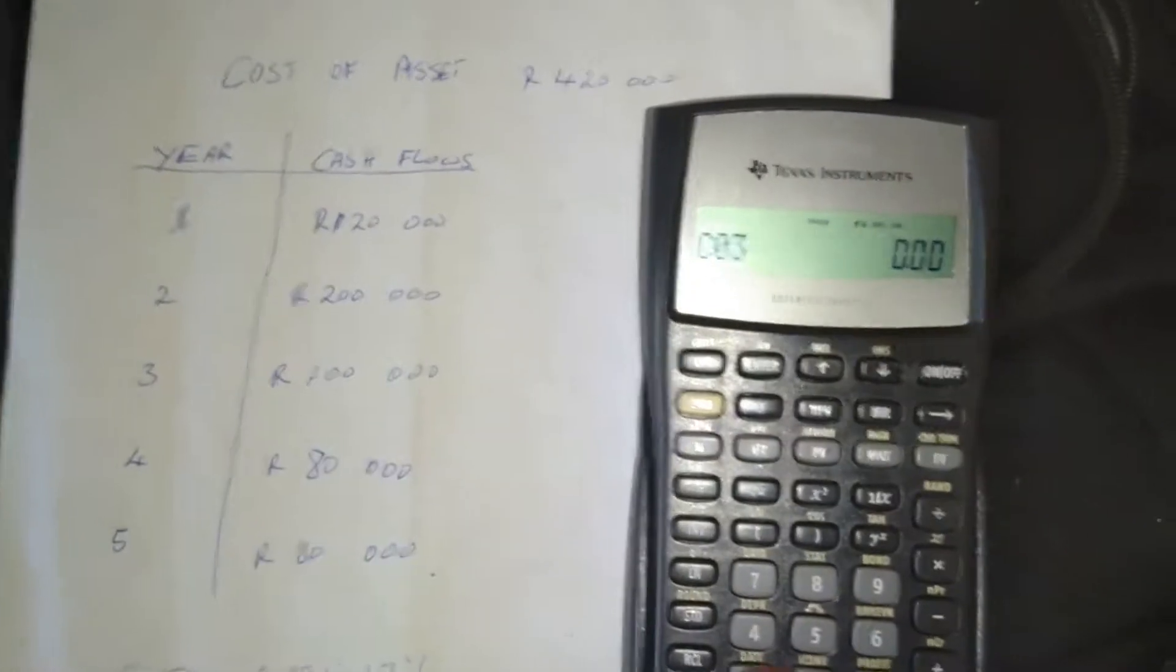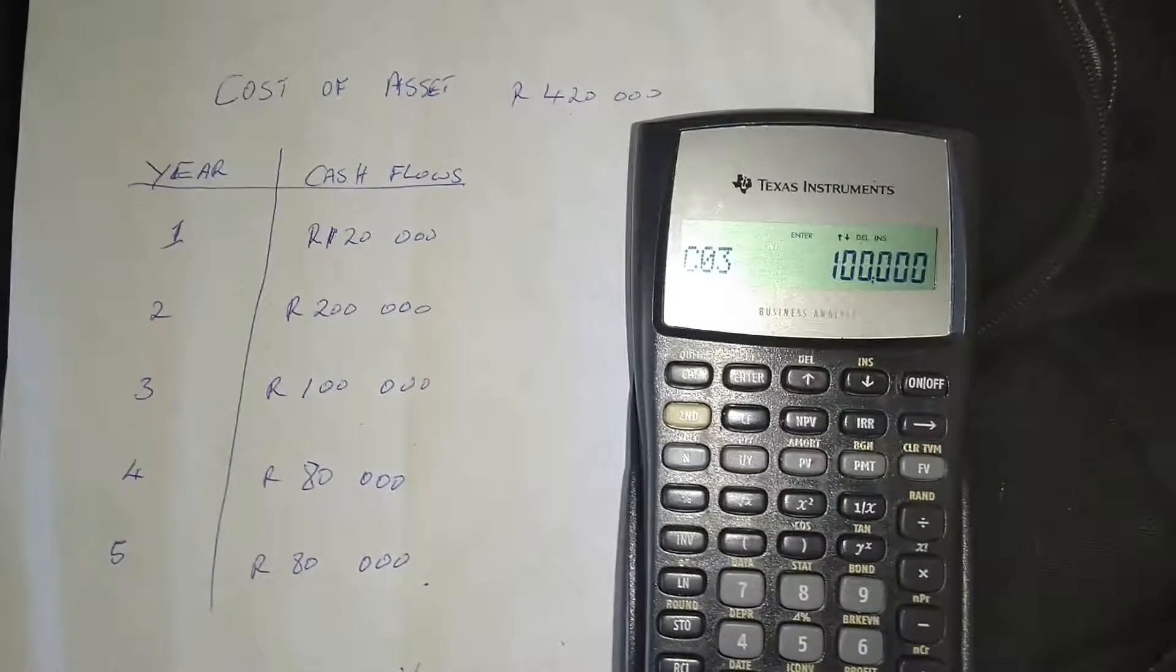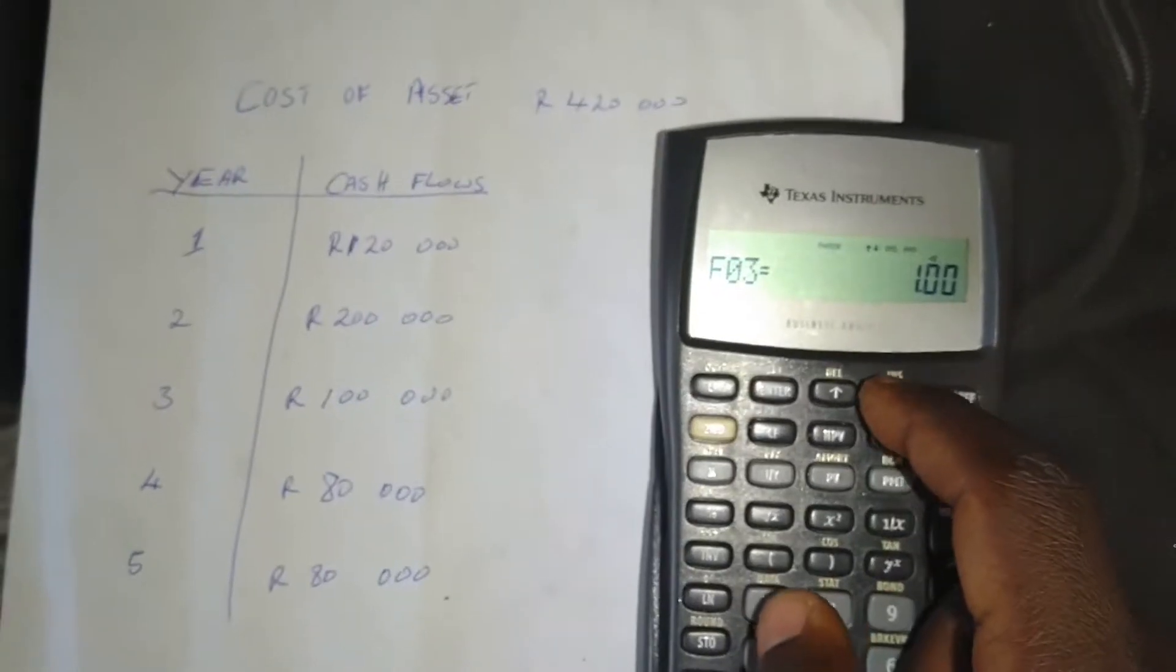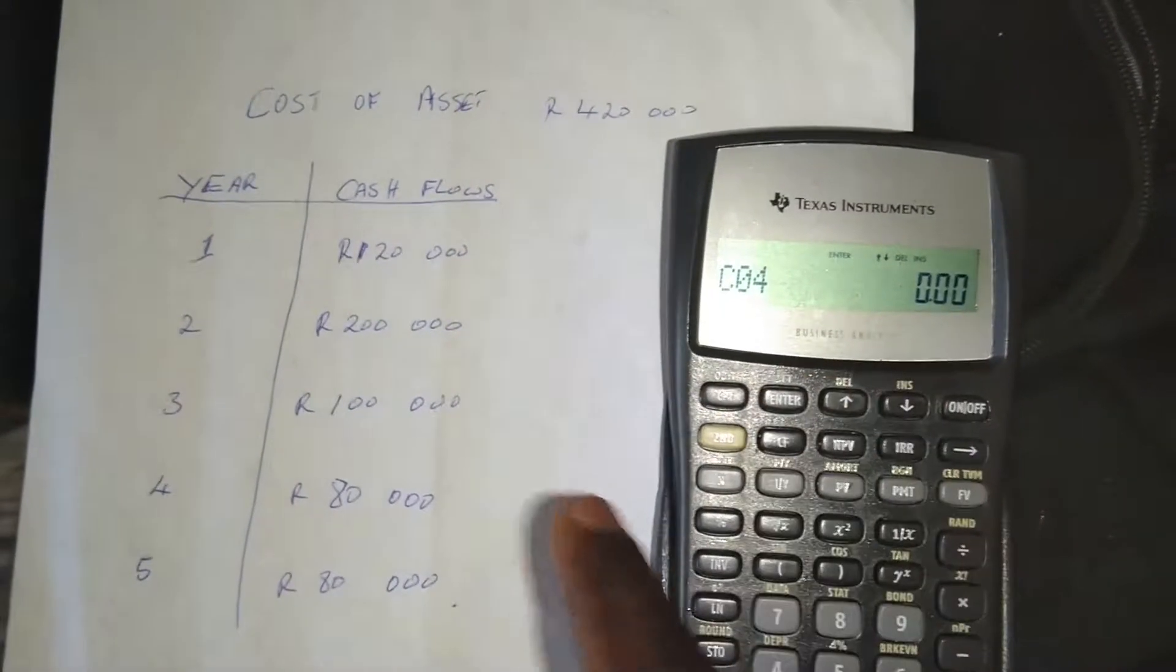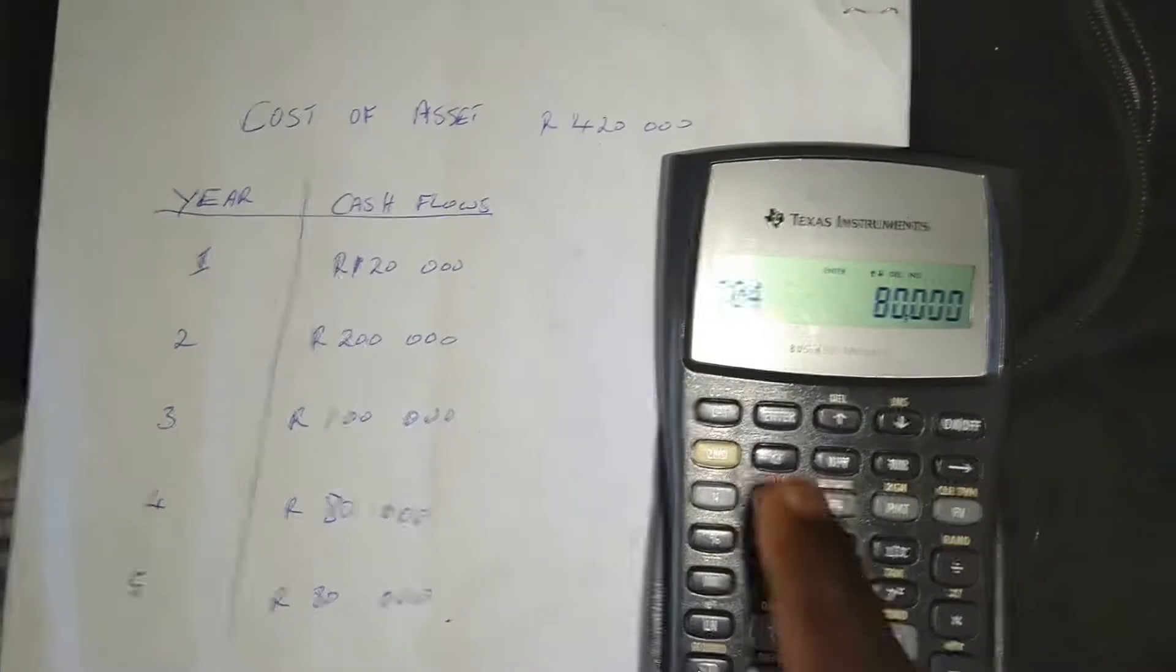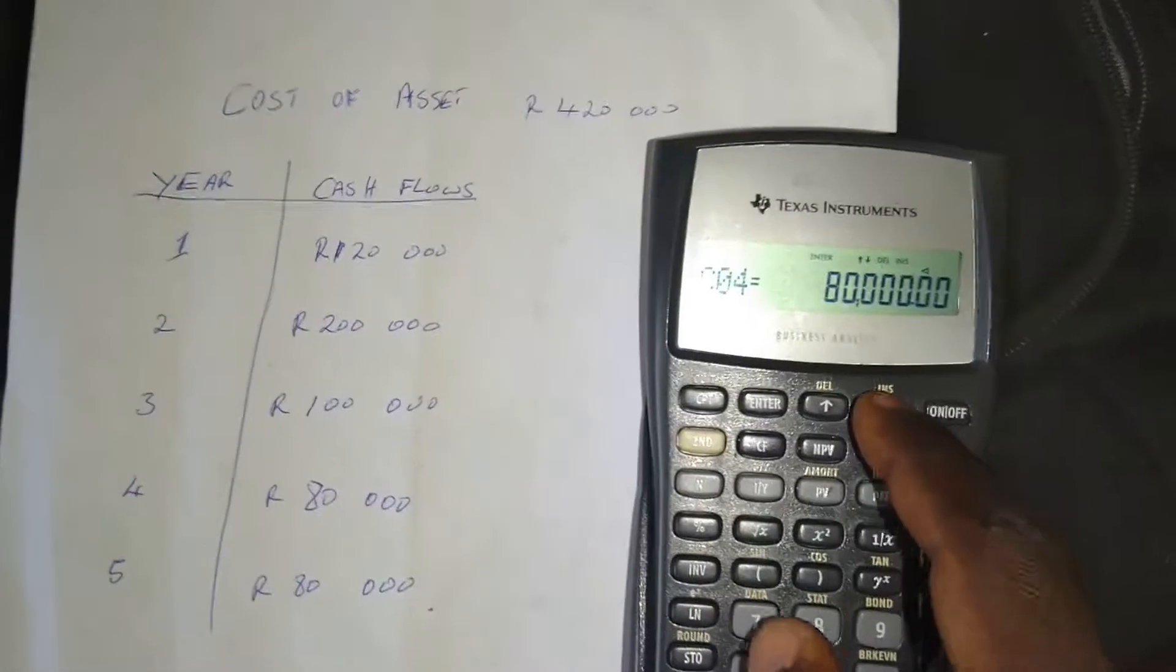It's 100,000 rand. So we put 100,000. Then we press enter. Then we press down arrow. Down arrow again to go to cash flow at year four. It's 80,000 rand. 80,000 rand. Then we press enter.